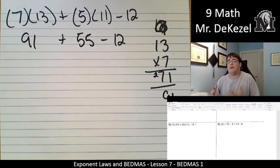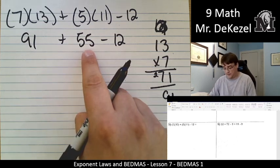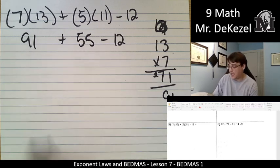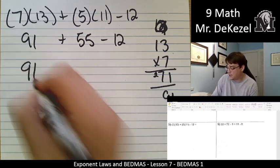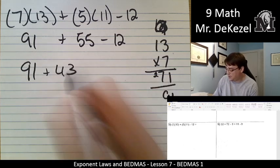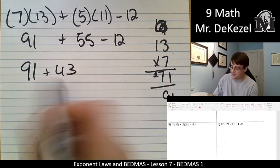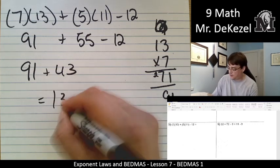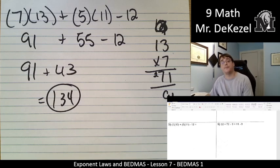I know I always do it from left to right, but to make it easier, I'm going to subtract 12 from 55. It's going to be much easier for me to add these together later. So this is 91 plus 43 then and then added these together. This is 134 for an answer.